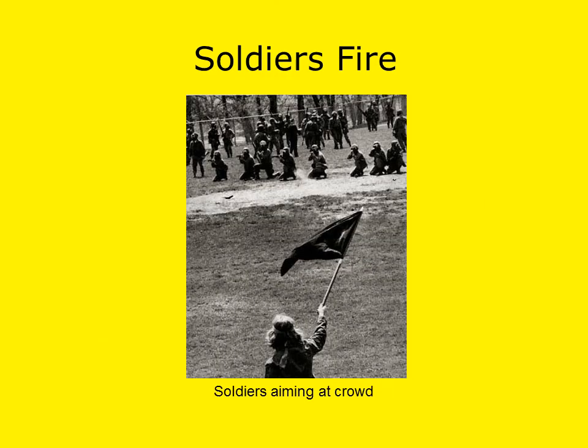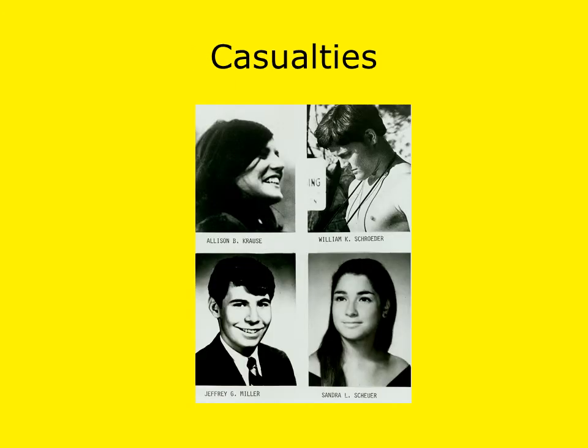The Guard had been ordered back because the crowd had been broken up. For unknown reasons, though, about a dozen soldiers turned and fired into the crowd, even though the confrontation at that point was over. There were a total of 67 shots fired in 13 seconds in the unexpected military action. Four students died in the shootings — Allison Krauss, Jeffrey Miller, Sandra Scheuer, and William Schroeder. Another nine students were injured, one of whom was permanently paralyzed as a result of being shot.